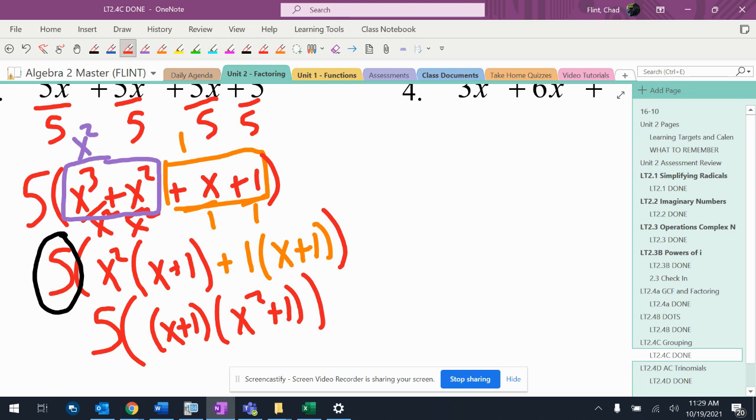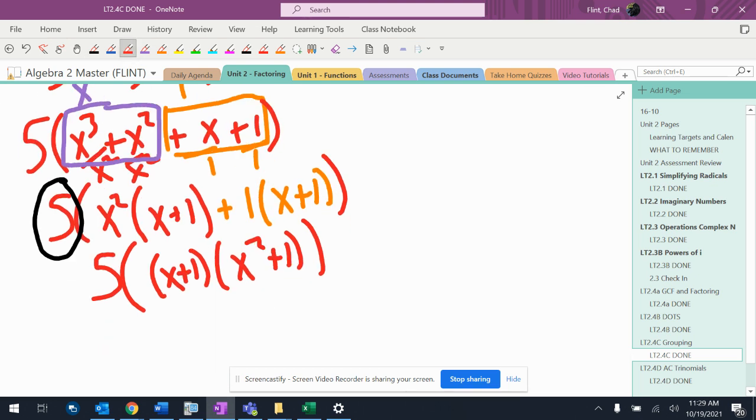That 5 lives out there. Now I don't actually need those parentheses—I put them there to make sure I did this the right way. It ends up just being 5(x + 1)(x² + 1).